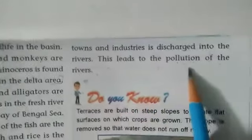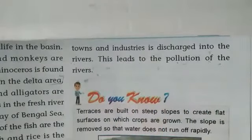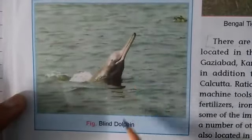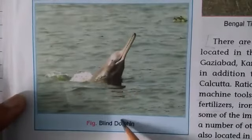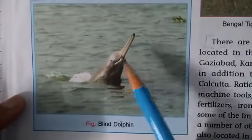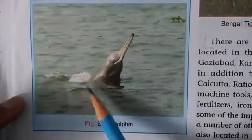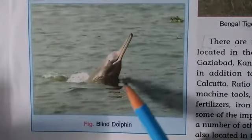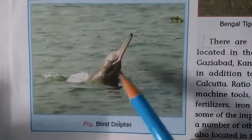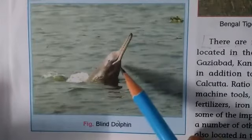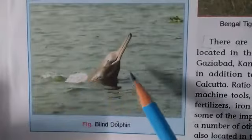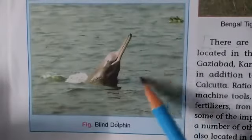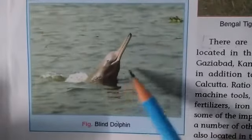This leads to pollution of the rivers. For example, the presence of the Sisu, a blind dolphin, is an indication of the health of the river. If you see this blind dolphin in a water body, it means that water body is fresh. However, untreated industrial and urban waste with high amounts of chemicals are killing this species.